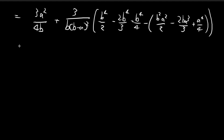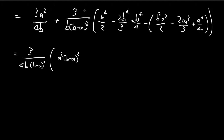This is essentially the answer, but we can simplify. We pull out the common factors 3, 4b, and (b minus a) squared. For the first term, this leaves a squared times (b minus a) squared. For the second term, after pulling out those factors and multiplying by 4, we combine the b to the power of 4 fractions: one half plus one quarter minus two thirds gives 1 over 12. So we have 1 over 12 times b to the power of 4.